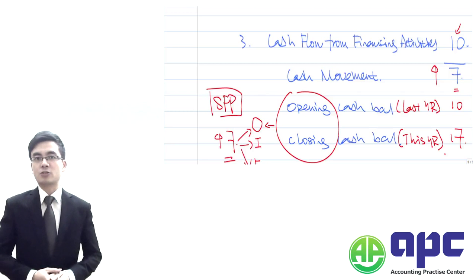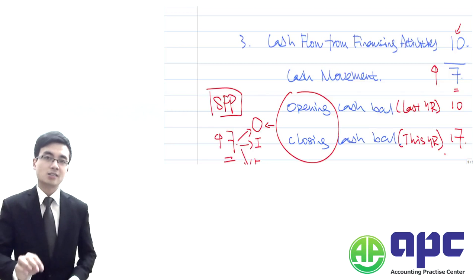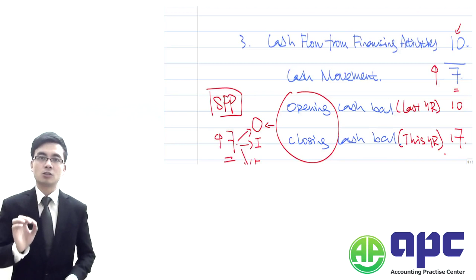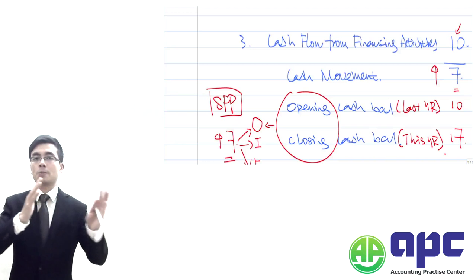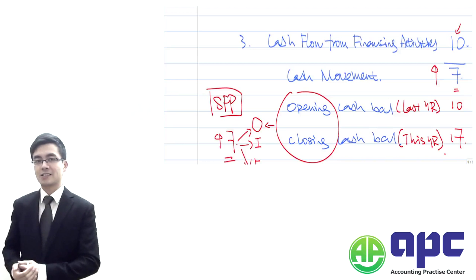So we need to show the understandable financial statements to the user, telling them why there's an increase of $7 worth of cash. Maybe because of the operating activity, maybe because of the investing, or maybe because of the financing activity.